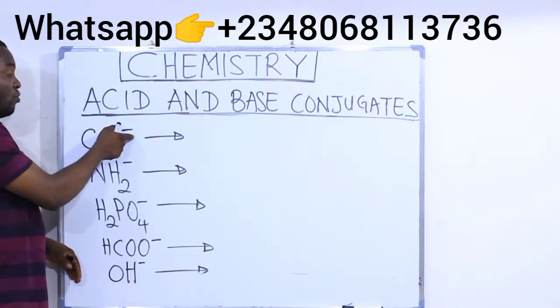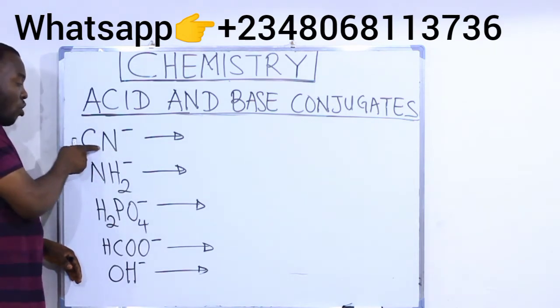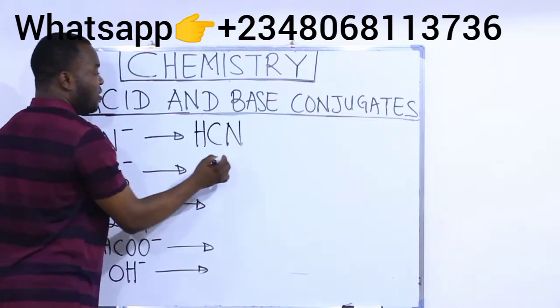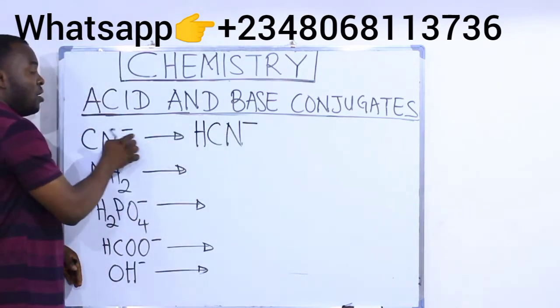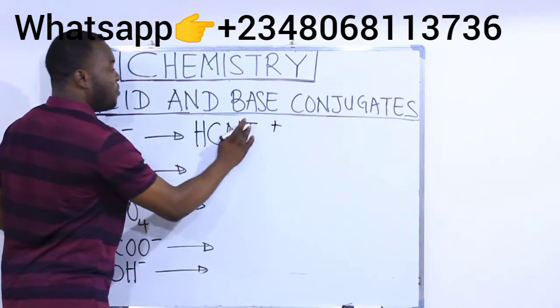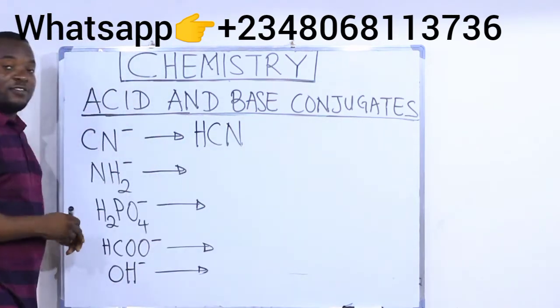So I have CN minus. My conjugate acid of this becomes HCN. There is a minus here already. By the time I add my plus charge to it, the plus will neutralize the minus. So I have my answer as HCN.